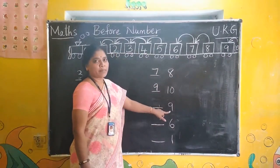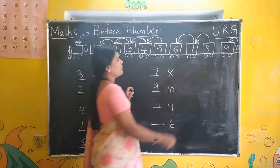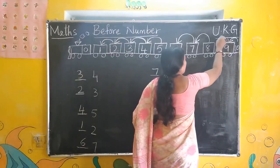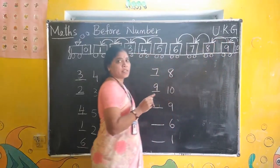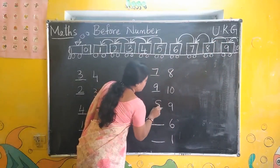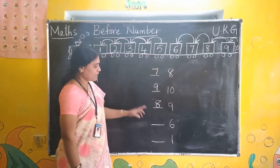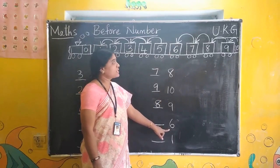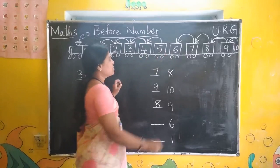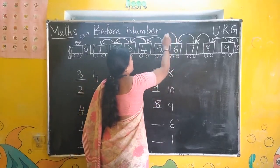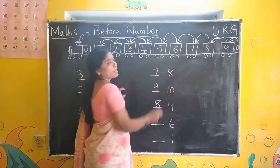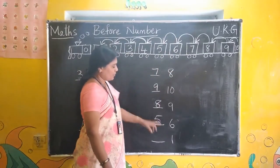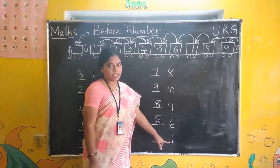Next. Look at this number. Number 9. Where is 9? Before 9, draw an arrow. What is this number? Number is 8. So, 8, 9. Next. Look at this number. Number is 6. Where is 6 here? Draw an arrow to before number. What is this number? 5.